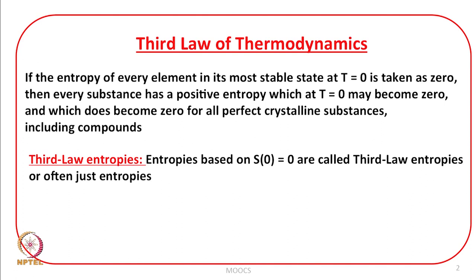And taking this value equal to zero is just a matter of convenience. That is why for all perfectly crystalline substances we set S₀ equal to zero. You may recall from the previous lecture that we discussed how to get the temperature dependence of entropies, and that entropy at any temperature can be calculated if we have the value of S₀. Entropies based upon S₀ equal to zero are called third law entropies.